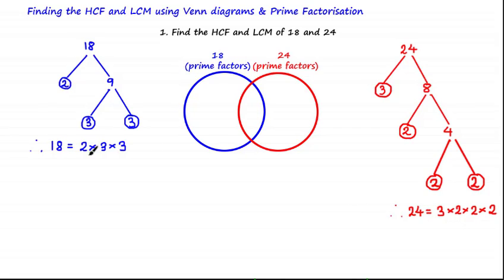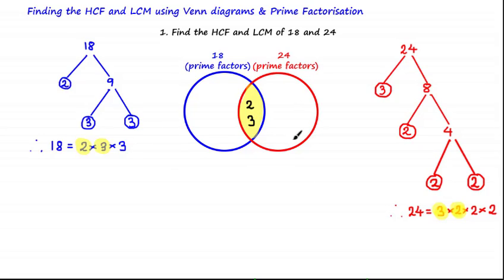Now we have the prime factors of each number, so we can complete the Venn diagram. Shading the region where the prime factors of each number are shared in common, we can notice that in both numbers there are matching 3s. We update the Venn diagram to show that both 24 and 18 have a prime factor of 3. We can also see there are matching 2s, so 2 also goes in the intersection. As there are no more common prime factors, this 3 is a prime factor of 18 but not 24, so it goes on the left side.